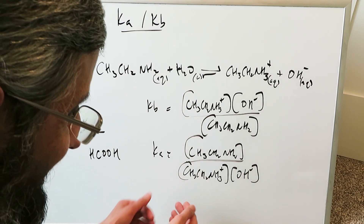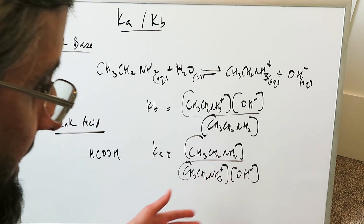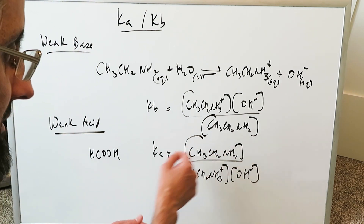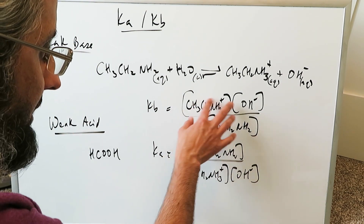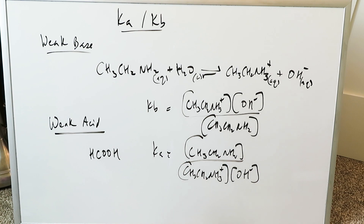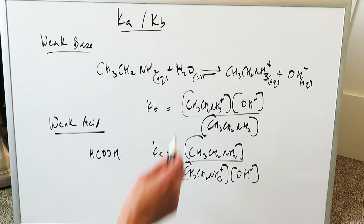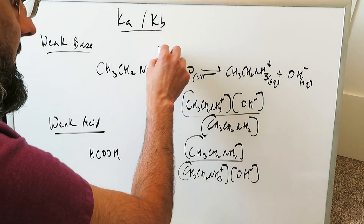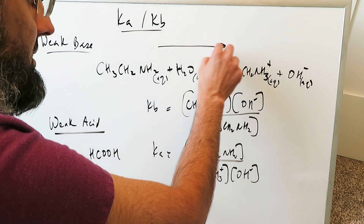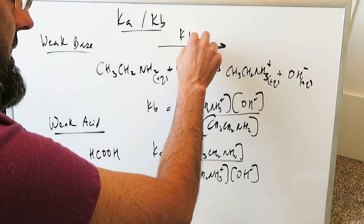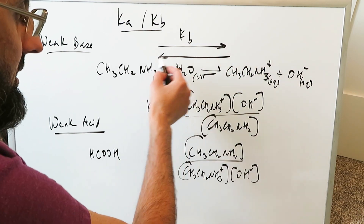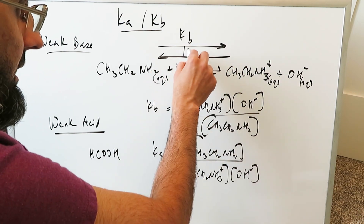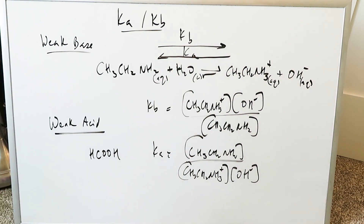The conjugate acid is now dissociating and giving rise to a base. Here, you have a base giving rise to a conjugate acid and a conjugate base. When I'm looking at this reaction in the forward direction, I'm looking at KB. When I'm looking at the reverse direction, I'm looking at Ka.